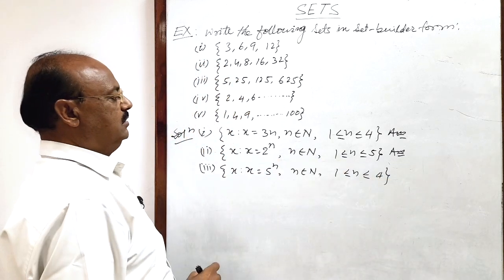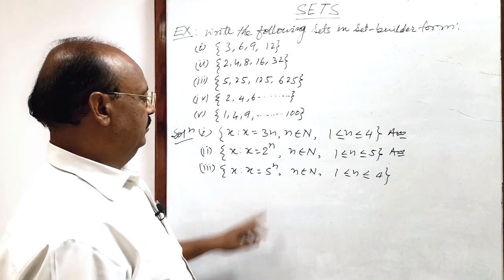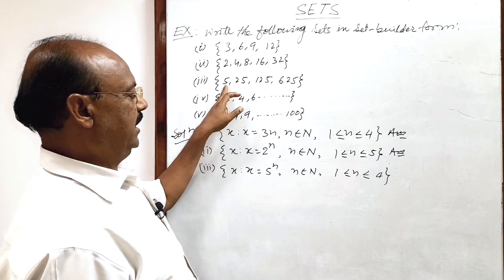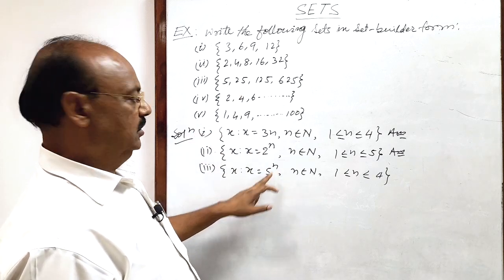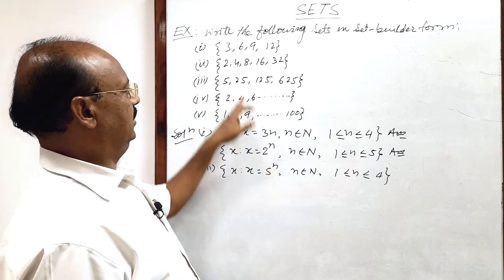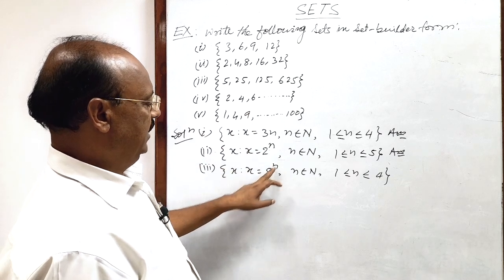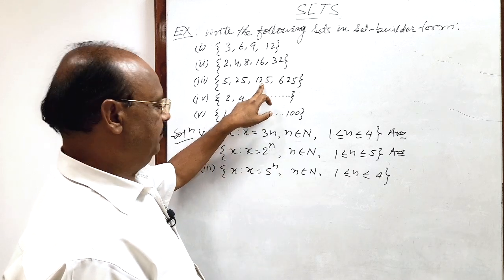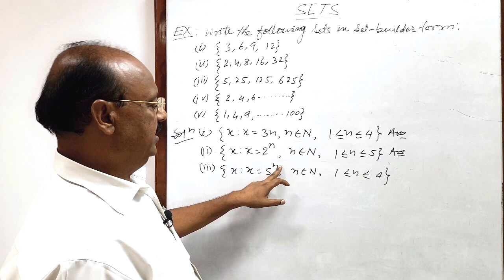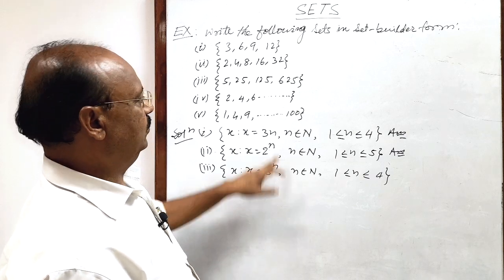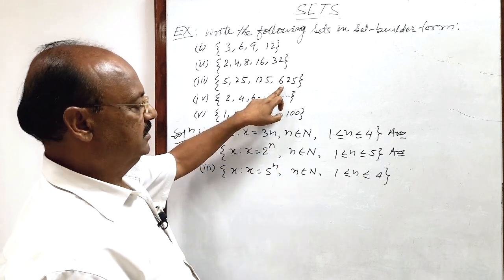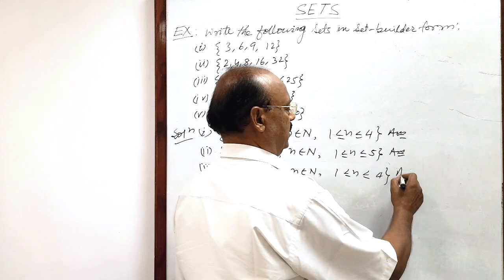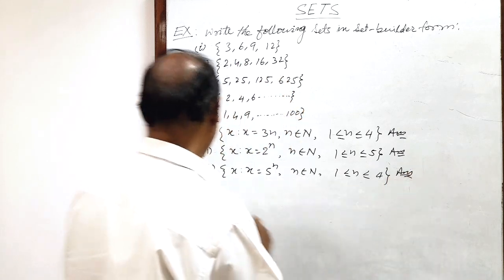Check the answer: if n is 1, then 5 to the power 1 is 5. If n is 2, then 5 squared is 25. If n is 3, then 5 cubed is 125. If n is 4, then 5 to the power 4 is 625. So this is the answer for the third part.